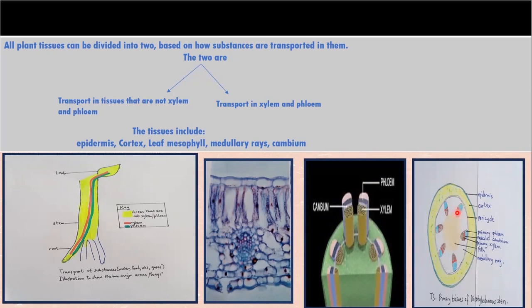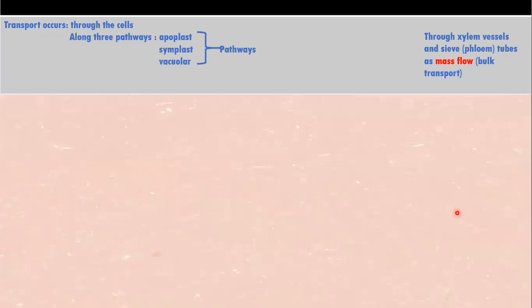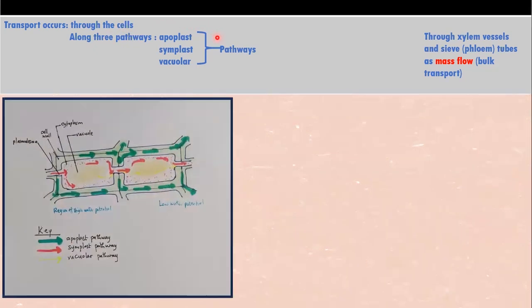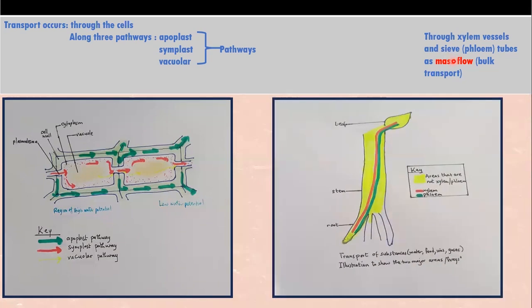So these are the two different groups of tissues in which transport occurs. If we look at the processes involved: substances are transported in the cortex, epidermis, and mesophyll through the apoplast, symplast, and vacuolar pathways, which we will discuss. But in the xylem and phloem, substances are transported by mass flow — bulk transport. We will discuss this in detail in our next lesson.